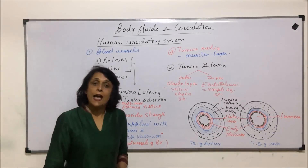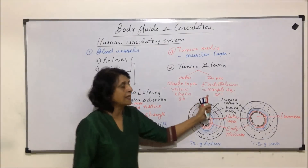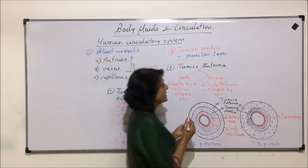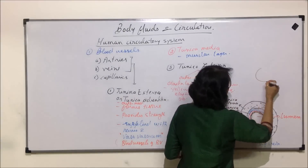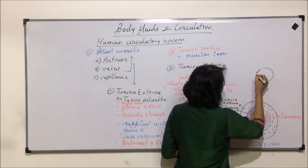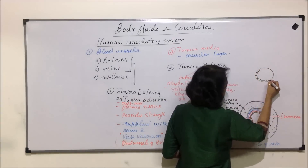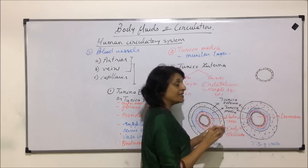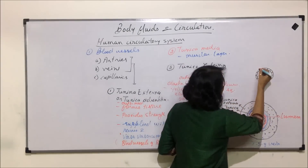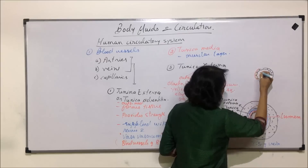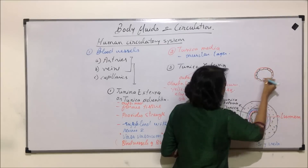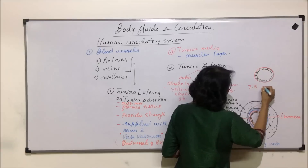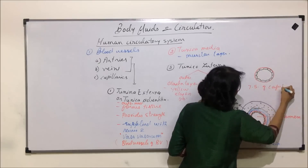Capillaries have only one layer, and that is endothelium. So if we make a section through a capillary, it would have only this simple squamous epithelium, and this epithelium is resting on a basement membrane. So there would be just a membrane on which this epithelium is resting — this is the transverse section of a capillary.